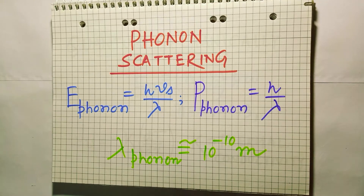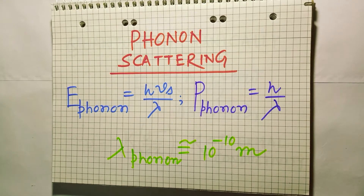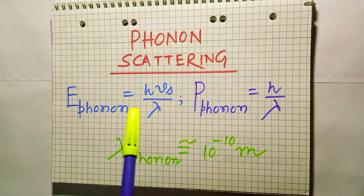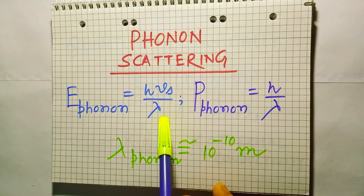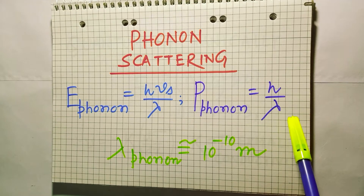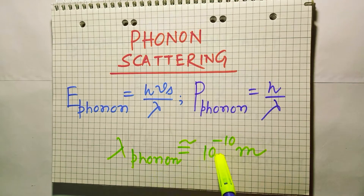Our first question will be: what is a phonon? In solid-state physics, a phonon is said to be the quantized mode of vibration occurring in a solid crystal lattice. They are massless quantum mechanical particles having some classical analog. The energy and momenta of the phonon are quantized. We can write it like: E-phonon equals h·Vs divided by lambda, where Vs is the speed of the phonon waves in the medium. P-phonon equals h by lambda, where h is Planck's constant and lambda is the wavelength of the phonon. Lambda-phonon is of the order of 10 to the minus 10 meters.